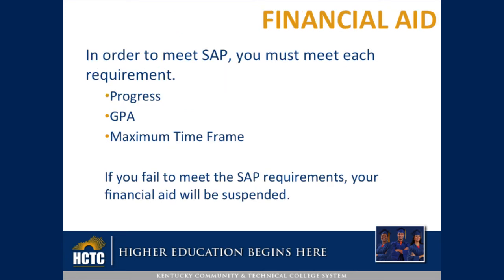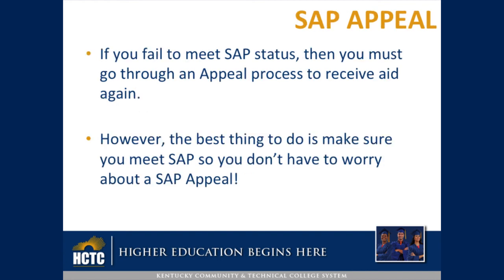In order to meet SAP, you must meet each of the requirements: Progress, GPA, and Maximum Time Frame. If you fail to meet the SAP requirements, your financial aid will be suspended, and you must go through an appeal process to receive aid again. However, the best thing to do is make sure you meet SAP, so you don't have to worry about how to SAP appeal.